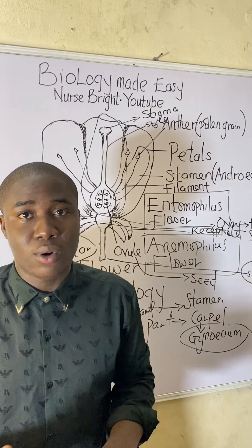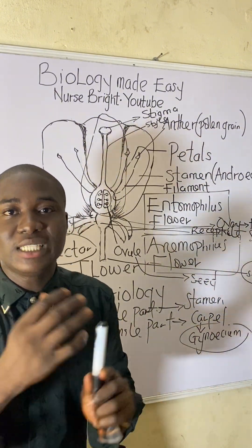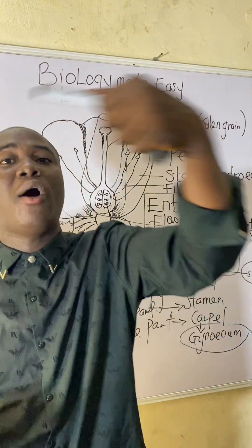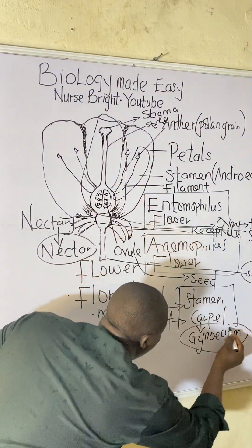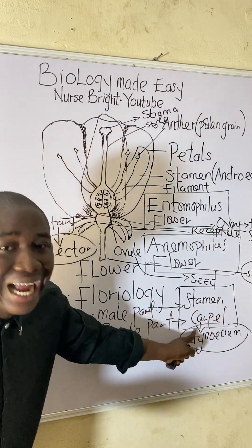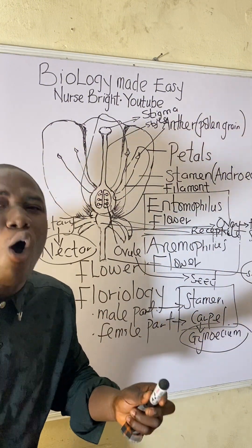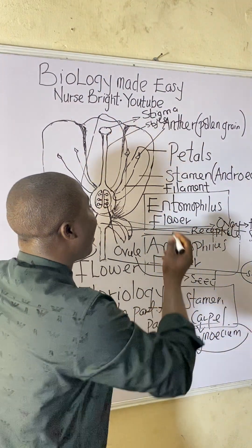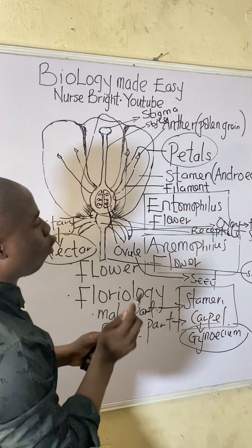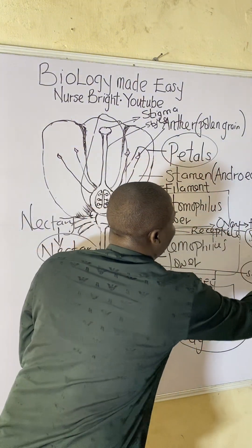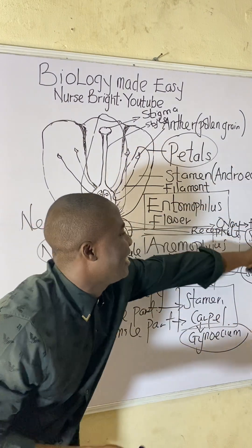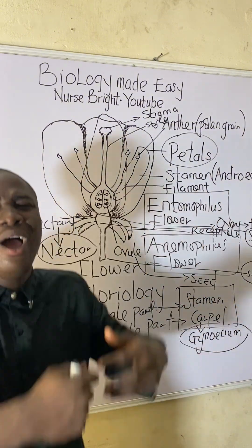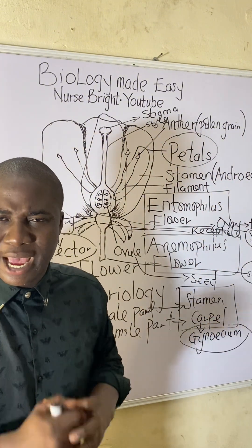Initially, I explained that flowers are divided into essential and non-essential parts. The non-essential parts are the petals and the sepals. The essential parts are the stamen and the carpel, because they contain the male and female gametes.